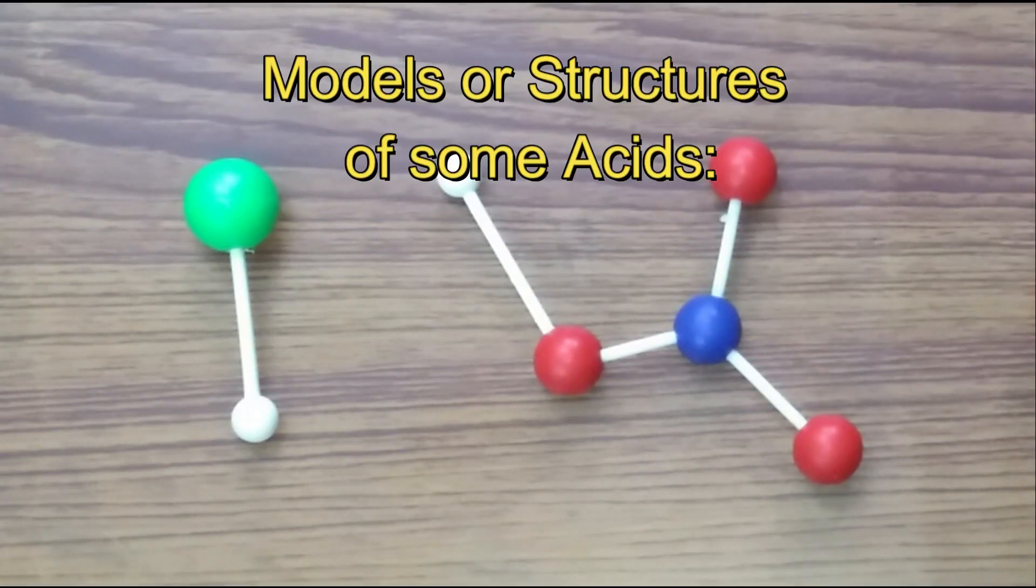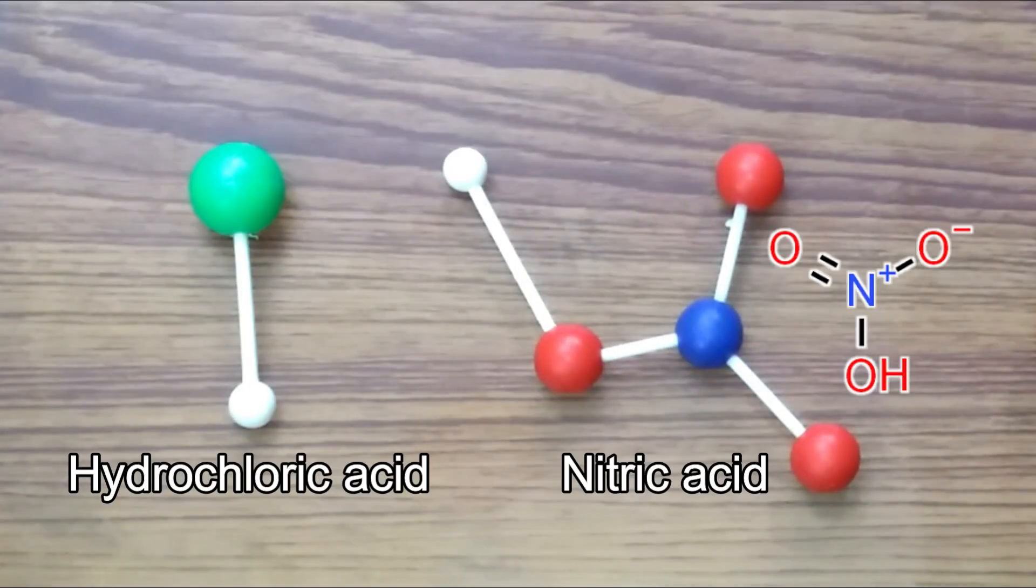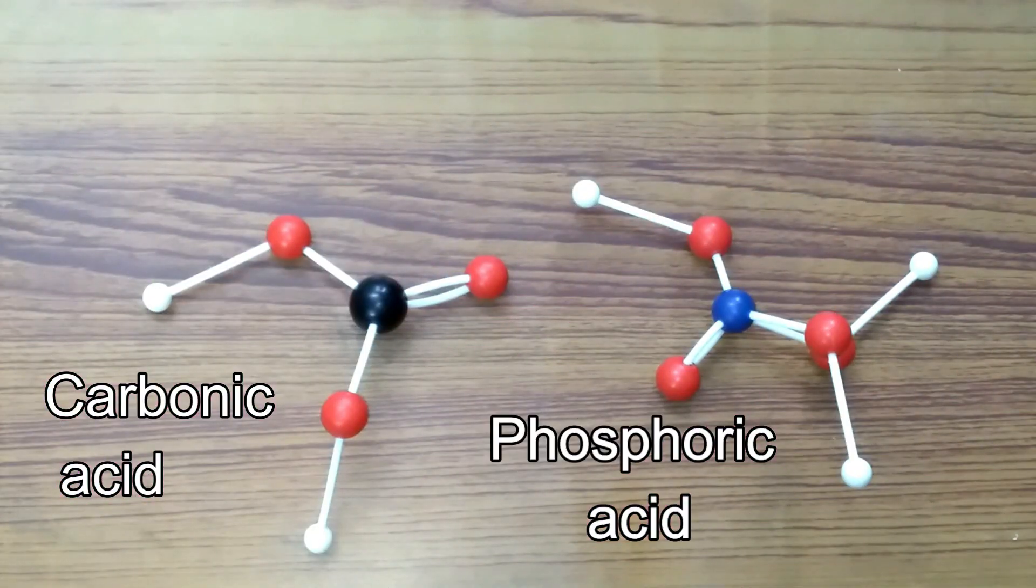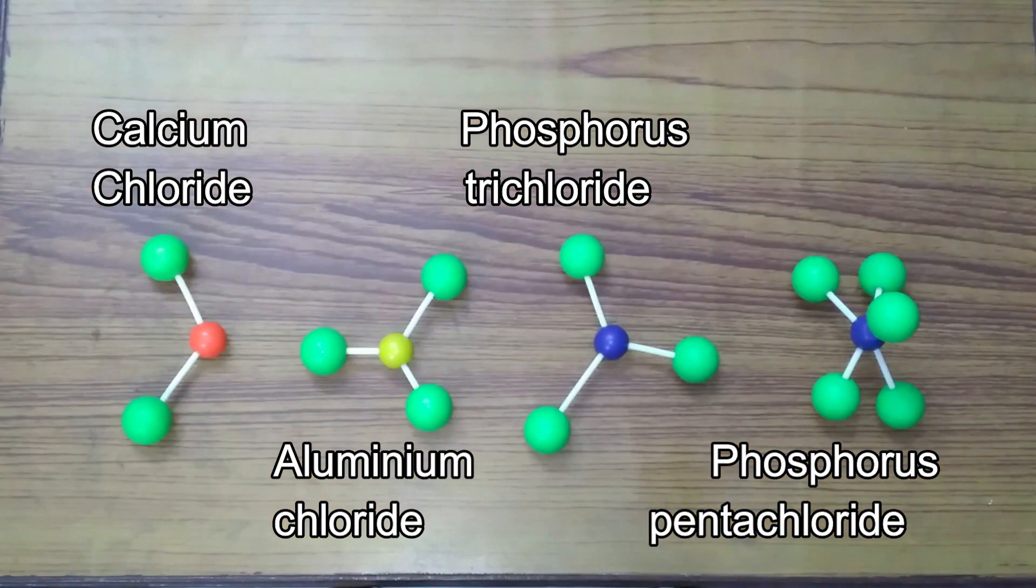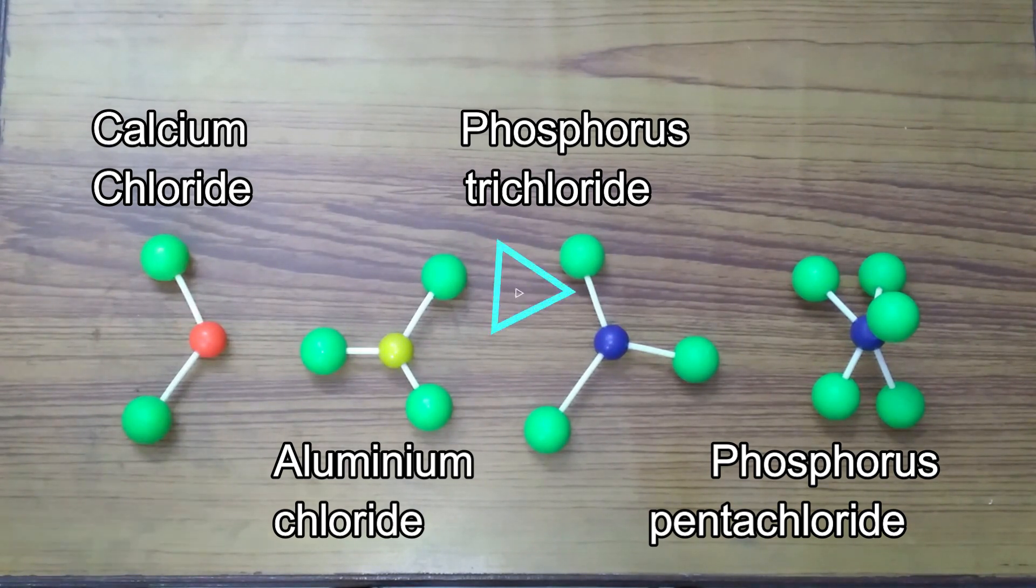These are the structures of some acids: hydrochloric acid, nitric acid, carbonic acid and phosphoric acid. Ball and stick models of calcium chloride, aluminium chloride, phosphorus trichloride, phosphorus pentachloride.